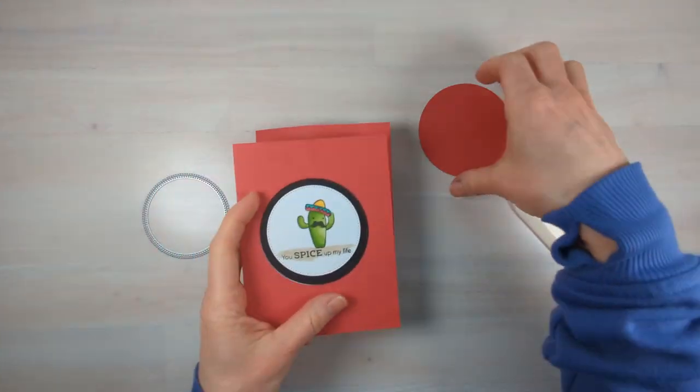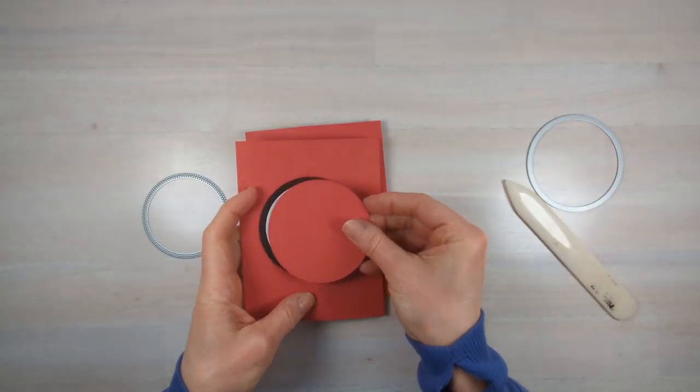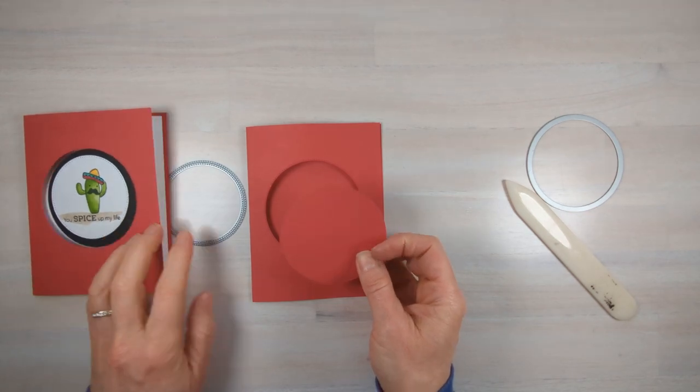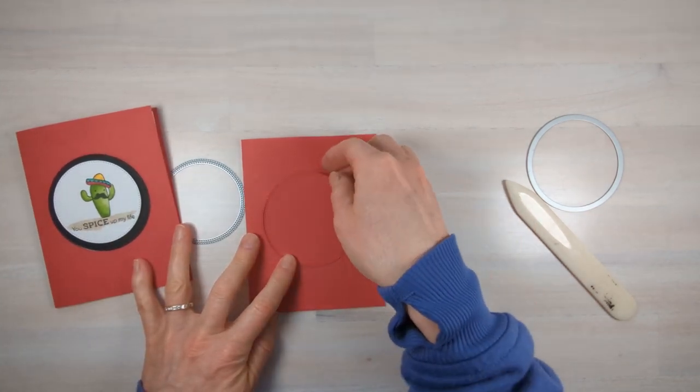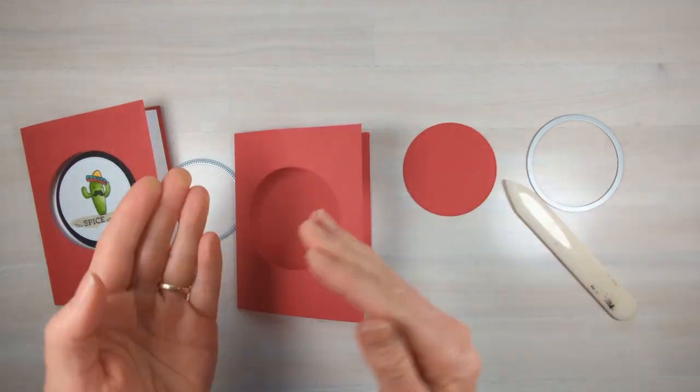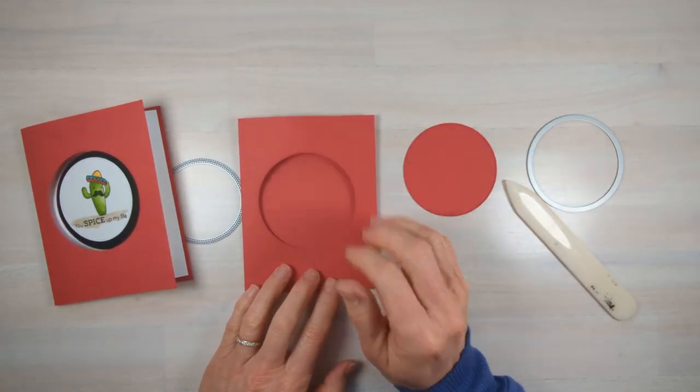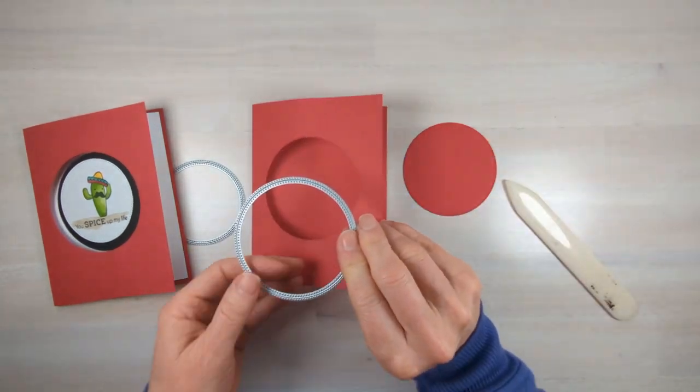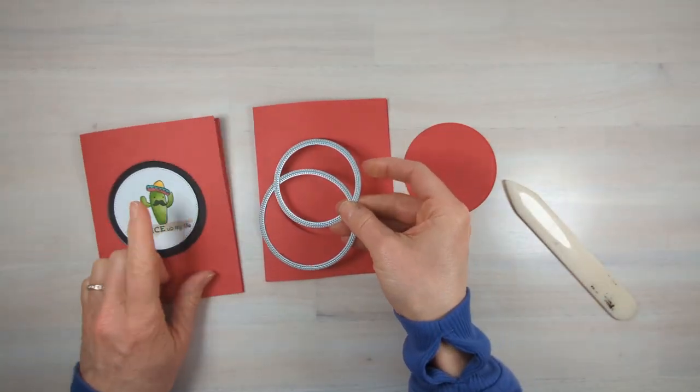So now that is going to cut out the center of our card. You can see that on my example, I used a black circle because I liked that setting that off. So if you're going to make multiple cards, save these insides because you can mix and match them. I'm going to cut out one in black and then one in white for the front.